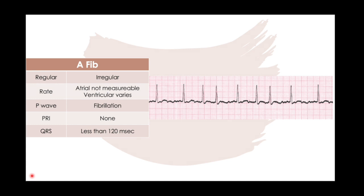Now let's talk about atrial fibrillation. If a rhythm is irregular, it's considered AFib until proven otherwise — and that usually plays out. Some things are irregularly irregular in a repeating pattern; we'll talk about heart blocks that are regularly irregular. AFib is irregularly irregular, meaning you don't know which chaotic P wave is going to make it through the AV node. There's no clear P wave — all those bumps are P waves chattering up there. Your number one problem with AFib is stroke, followed by heart failure. Patients feel bad because they lose AV synchrony, and that loss can have significant hemodynamic effects.